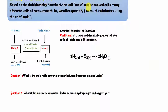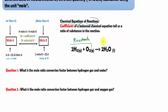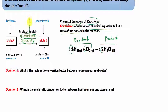Another substance we can use to quantify in terms of mole is a chemical equation — a chemical reaction. Now we look at how different chemical formulas combine together to form a chemical reaction. A chemical reaction consists of reactants that combine together to form products. In a balanced chemical equation, the coefficient in front of each chemical formula tells us the ratio of substances. For example: two moles of hydrogen react with one mole of oxygen to produce two moles of water.